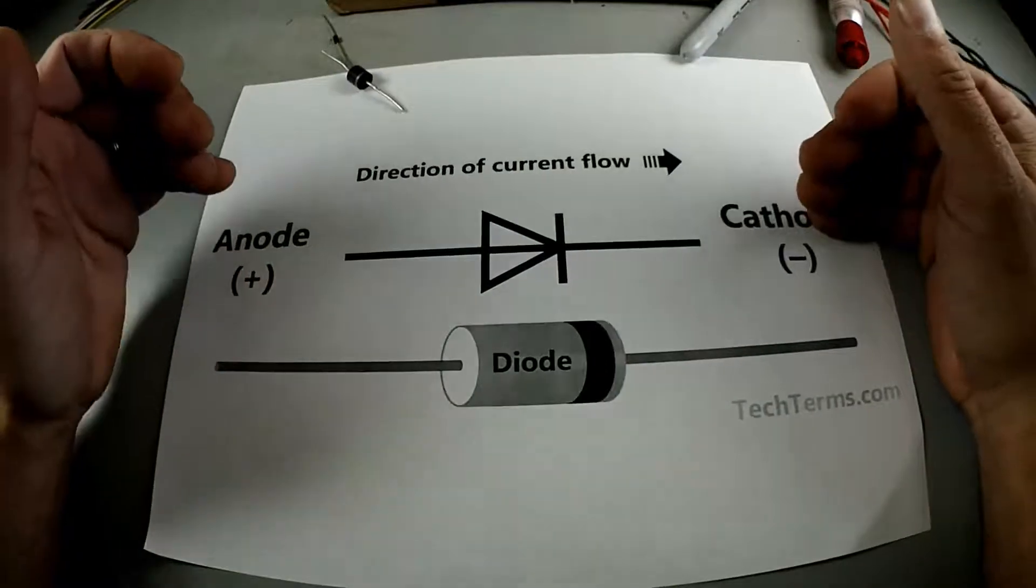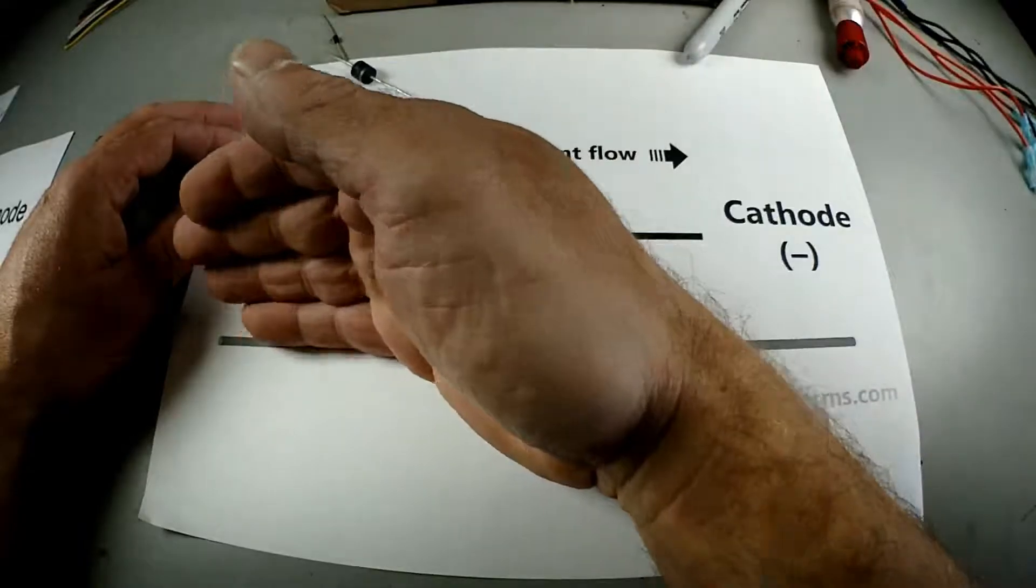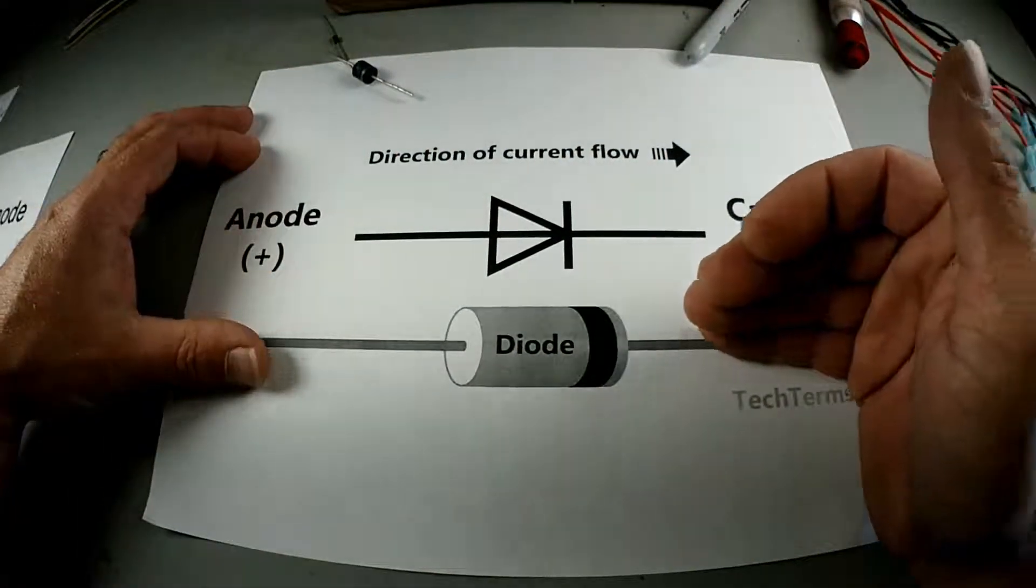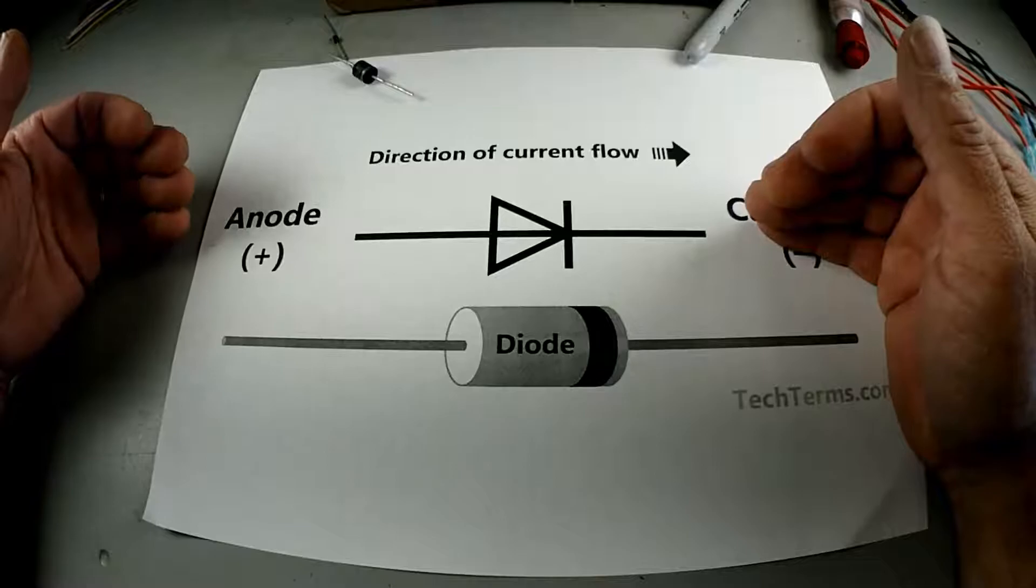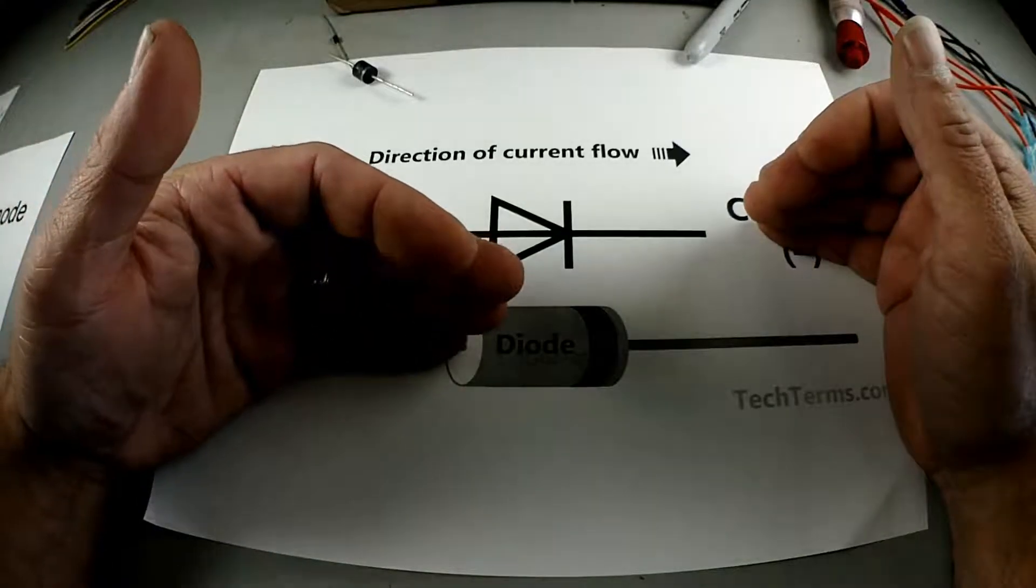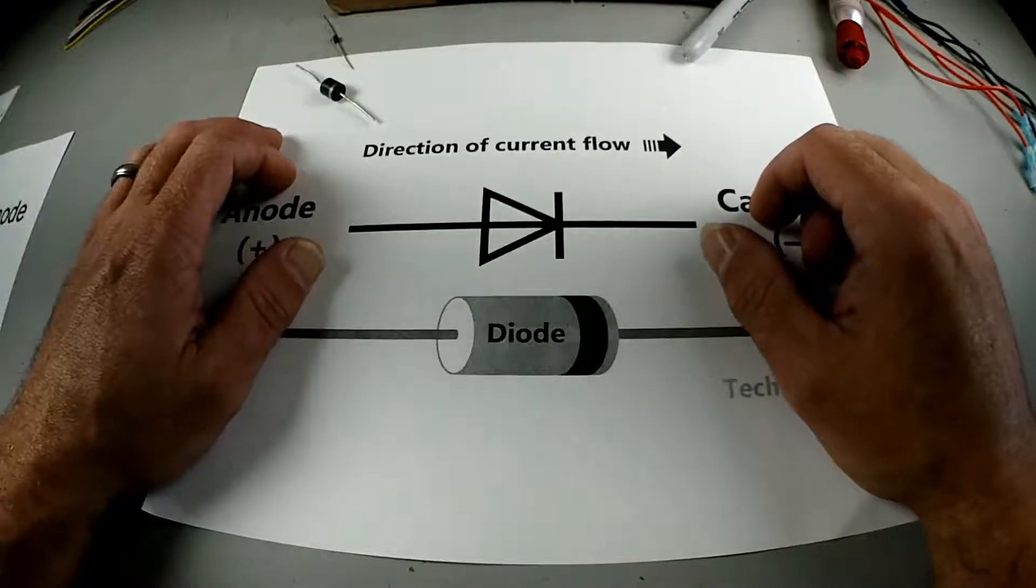Now negative would be cathode to anode and then you could transfer ground this way. If you try to transfer power from this side it will get blocked by the diode. If you try to transfer ground from this side it'll get blocked by the diode. Let me show you exactly what I mean.